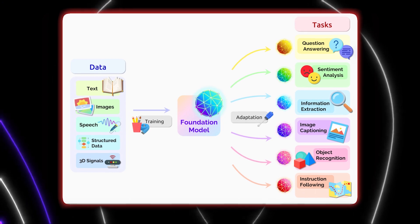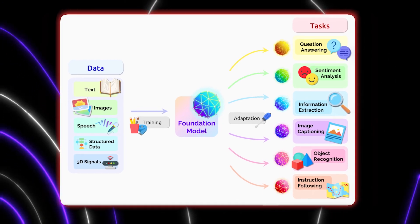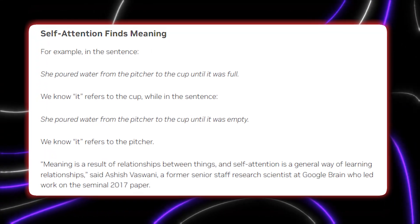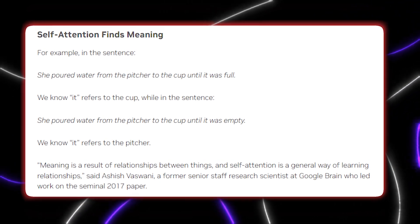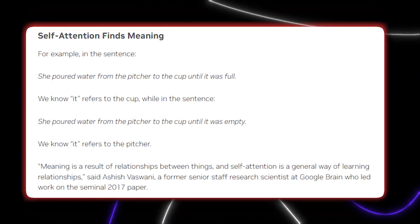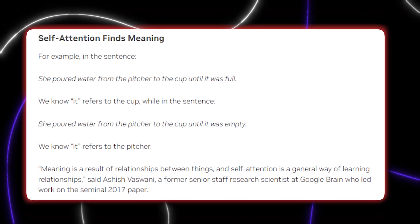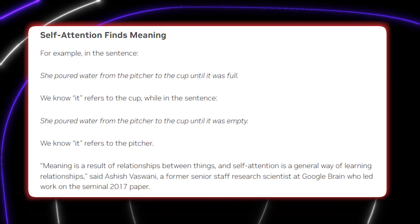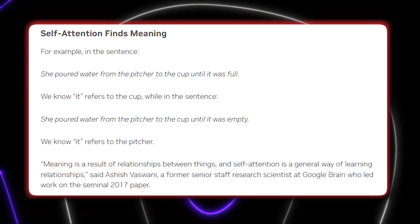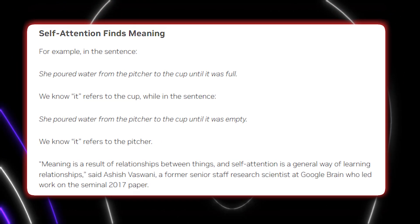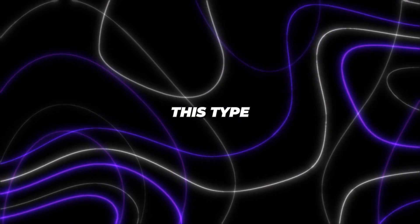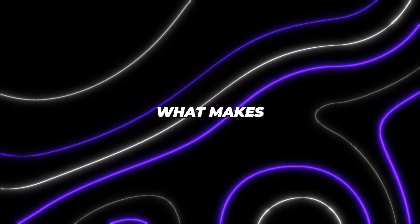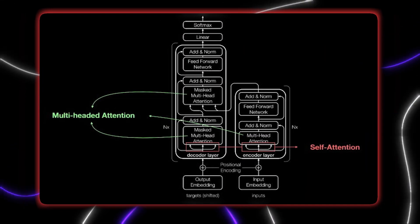NVIDIA provides a good example of this in their blog post. The sentence 'she poured water from the pitcher to the cup until it was full' has the word 'it' refer to the cup. While the sentence 'she poured water from the pitcher to the cup until it was empty' has the word 'it' refer to the pitcher. This type of self-attention and contextual learning is what makes transformers so good.